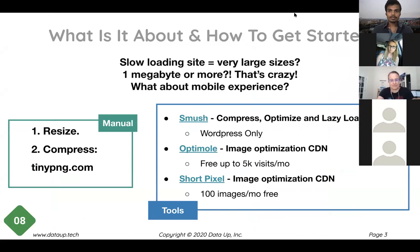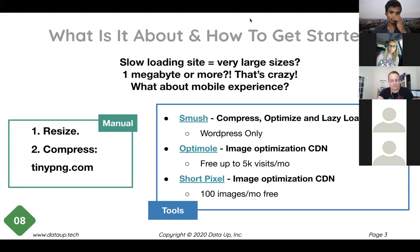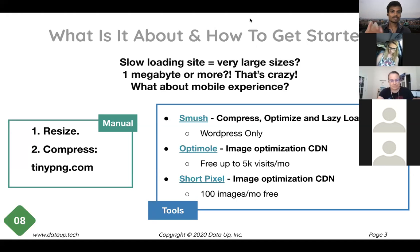There are several things we need to be aware of when talking about optimization. First, figure out how big your images currently are. If they're really big, we need to make them smaller. If you're taking a picture with a phone, even a modern phone will produce a photo that's two to three megabytes or bigger. If your website is trying to load a two or three megabyte image, that's not good. So you need to resize it first — make sure the image size is aligned to what you need — and then after that, we compress.